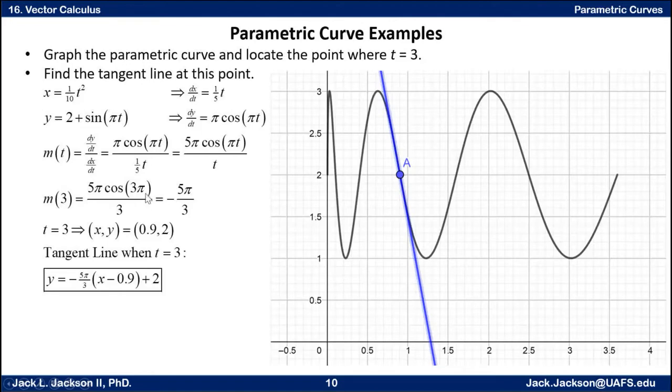Specifically, we know that T is 3 at our point right here. So we plug in 3 for T and work this out. Cosine of 3π is negative 1, so this is negative 5π over 3 for the slope there. We also know from our last screen that XY has coordinates 0.9 and 2 for X and Y respectively when T is 3. So we know the X and Y coordinates of the point and the slope. It's real easy to write down the tangent line equation: Y equals the slope, negative 5π over 3, times parentheses X minus 0.9 close parentheses plus 2. That's the point-slope version of the line.